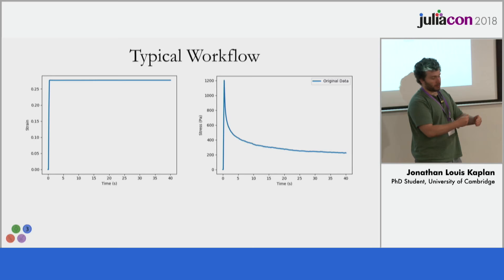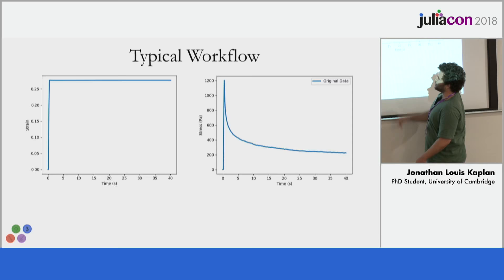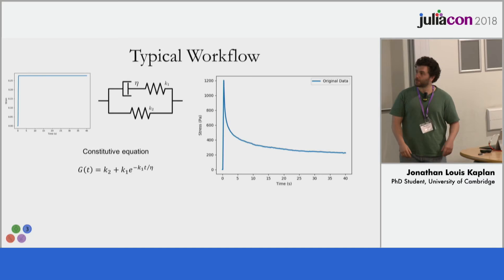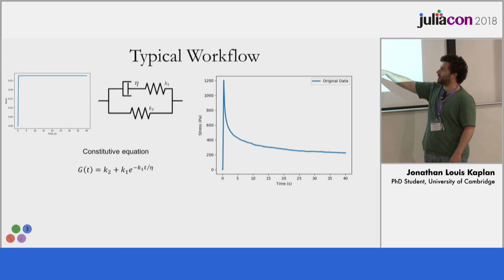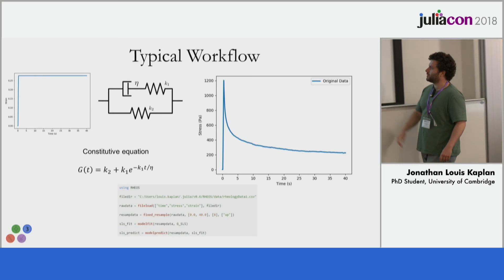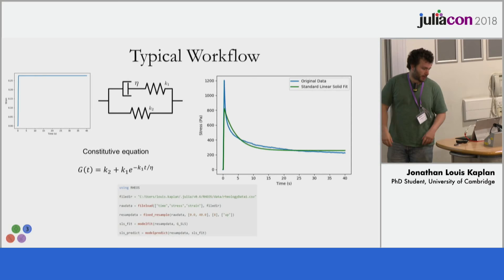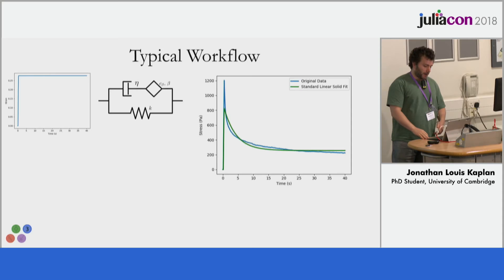Here is some real experimental data. Someone has deformed a biological material very quickly, almost instantaneously, and then over time the stress has reduced — this is called a stress relaxation experiment. In the first case you might want to fit a standard linear solid model, which has three parameters: two springs and a dashpot. The code is straightforward: you load in a model, use a convenience function to load the data, do some pre-processing, choose your model, then predict and see how good the fit is. In this case it's not a great fit — this isn't the right model for this material.